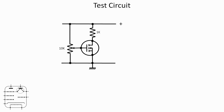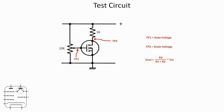We're going to have two test points. Test point one is the gate voltage and test point two is the drain voltage. Knowing the drain voltage and the supply voltage, we can then use the voltage divider equation: V_out equals R2 over (R1 plus R2) times V_in. If we rearrange that equation in terms of R2, which is effectively the MOSFET in this circuit, we can calculate the resistance: R2 equals V_out times R1 over (V_in minus V_out). That's the theory, so let's start with the first device.